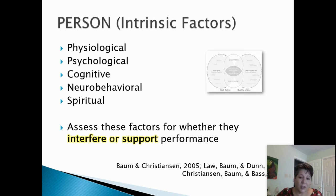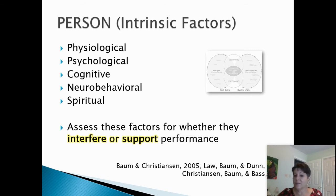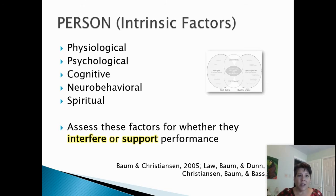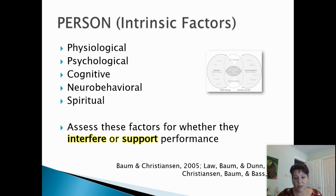What does the person include? This is all the intrinsic factors. These are five different aspects: physiological, psychological, cognitive, neurobehavioral — which is different from cognitive — and the spiritual aspect. This particular model uses the words supports and barriers a lot. So we ask: are these aspects providing barriers or interfering with the person's performance, or do they support the person's performance? Everybody has a little bit of both going on in their life when we're looking at the person.